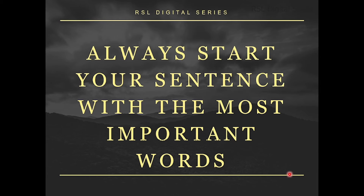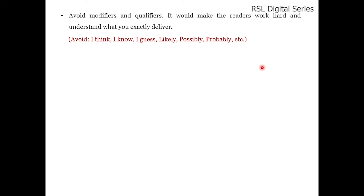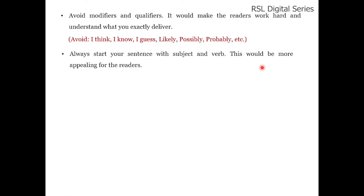The third rule is: always start your sentence with the most important words. Avoid modifiers and qualifiers because they make readers work hard to understand what you are delivering. Avoid using words like 'I think,' 'I know,' 'I guess,' 'likely,' 'possible,' 'probably,' etc. — if you write this way, you appear unsure about what you are delivering and readers get confused. Always start your sentence with subject and verb; this is simpler and more appealing for readers.